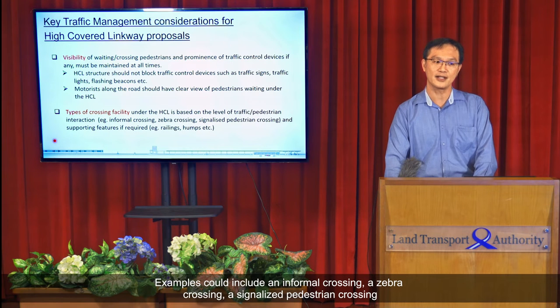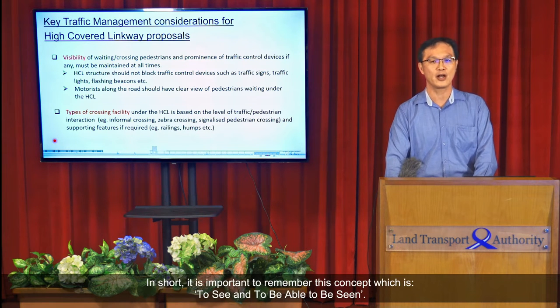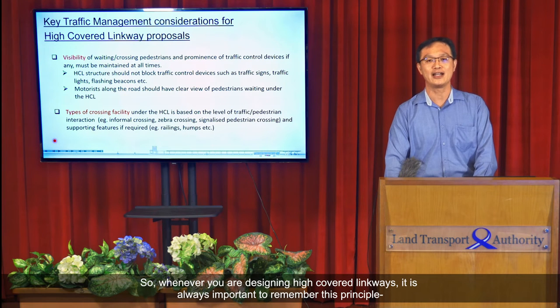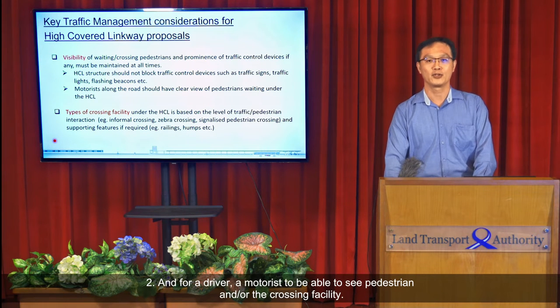The crossing types could be an informal crossing, a zebra crossing, a signalised pedestrian crossing, and other supporting features like railings and road humps. It is important to remember this key concept: to see and to be seen. Whenever you are designing HCLs, always ensure that a pedestrian is able to see and can be seen, and that a driver or motorist is able to see the pedestrian and the crossing facility.